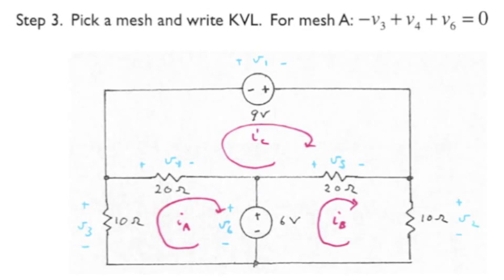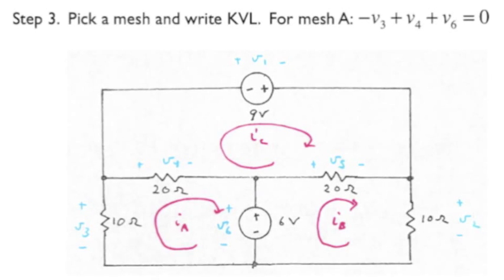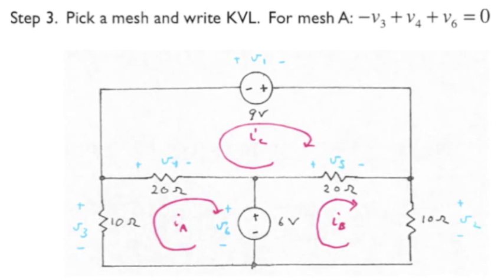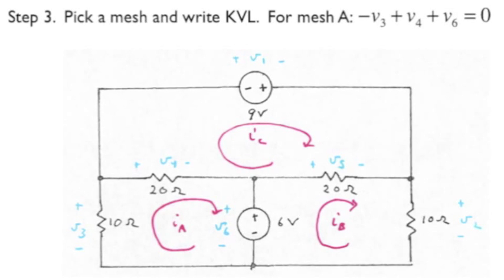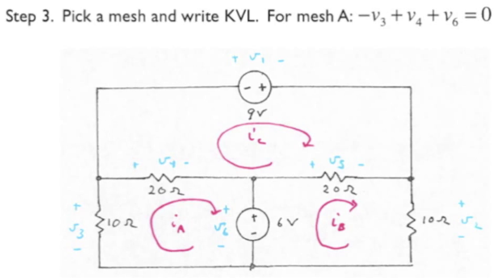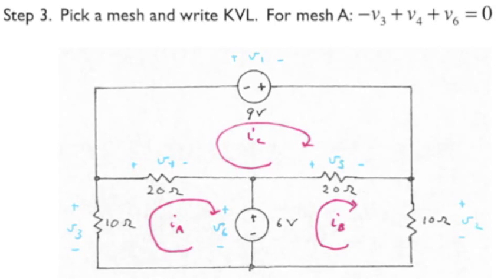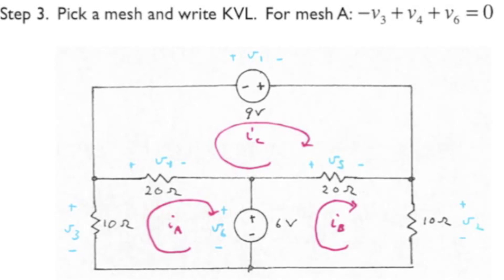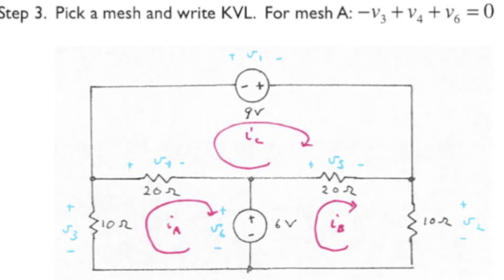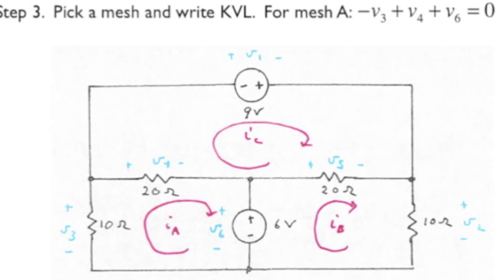Next, pick a mesh and write Kirchhoff's voltage law. We'll actually apply this step to each mesh separately, but for now, let's focus on mesh A. Kirchhoff's voltage law may be expressed for this mesh as minus V3 plus V4 plus V6 equals zero. That is, the algebraic sum of voltages around the closed loop is equal to zero.